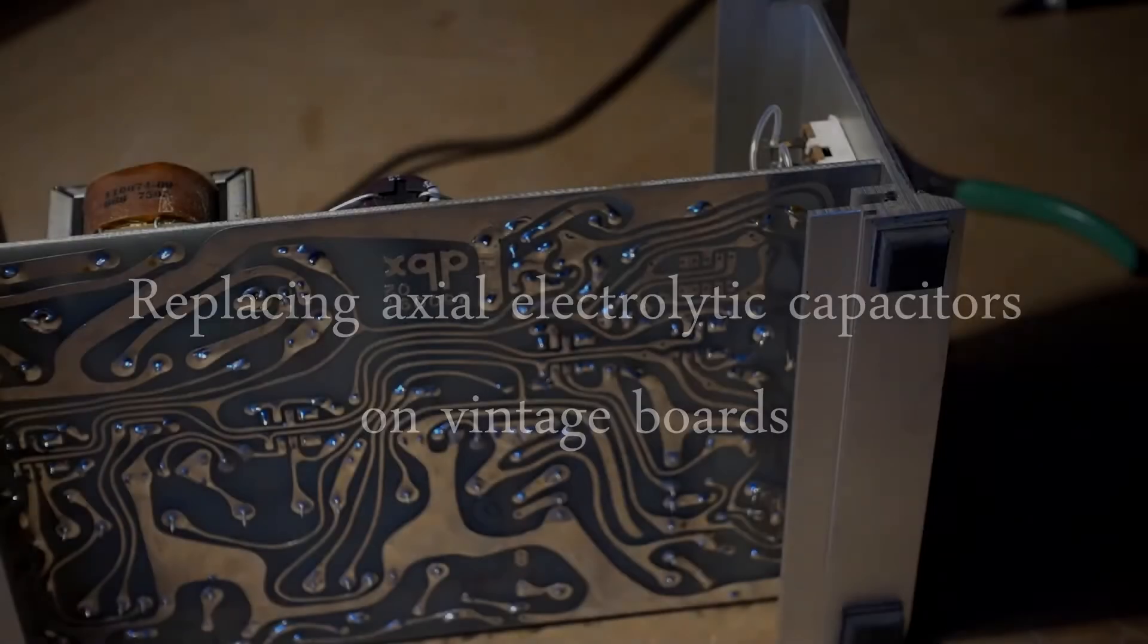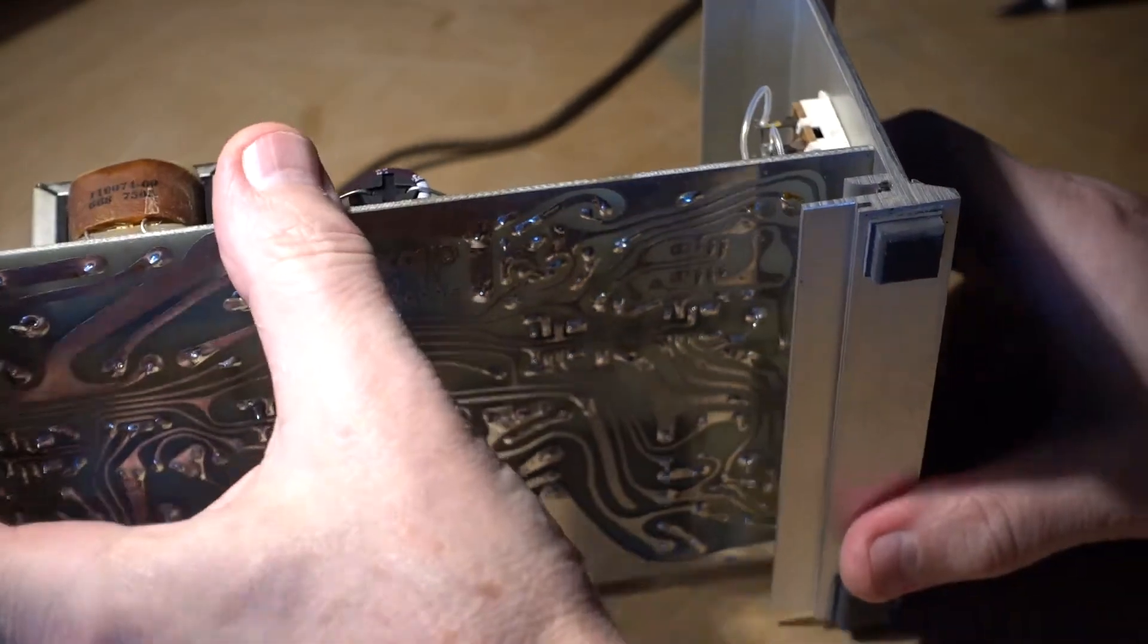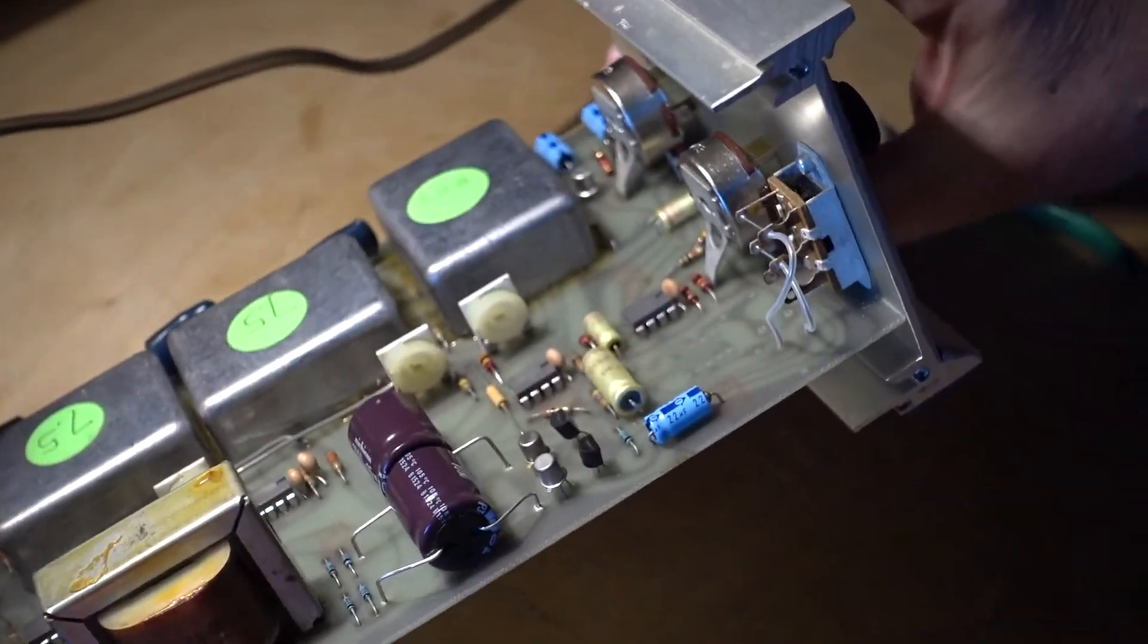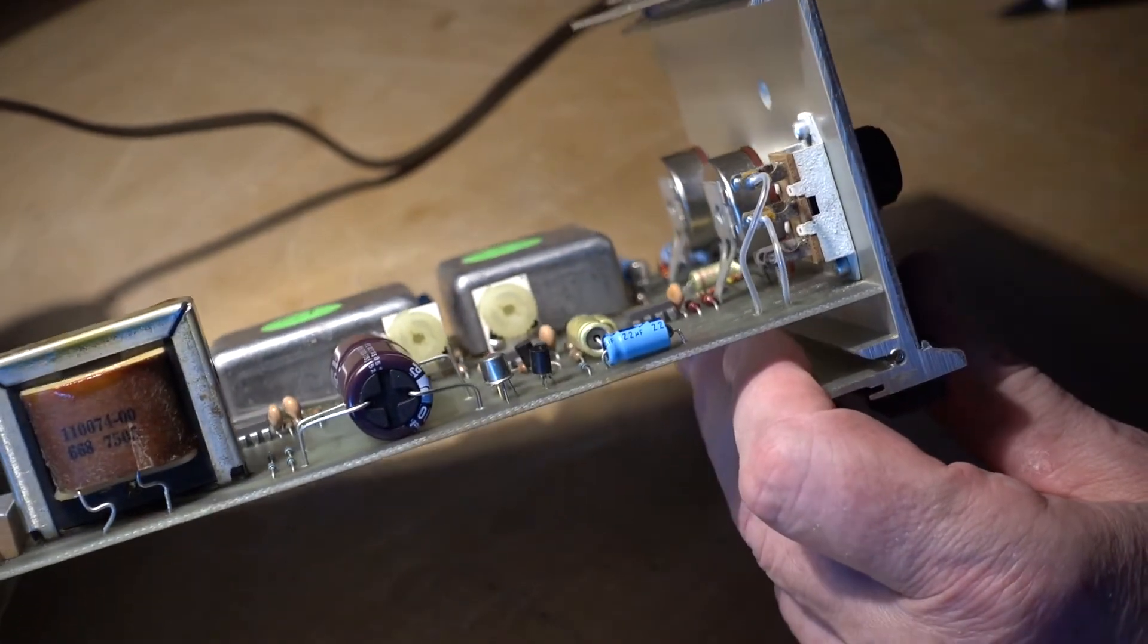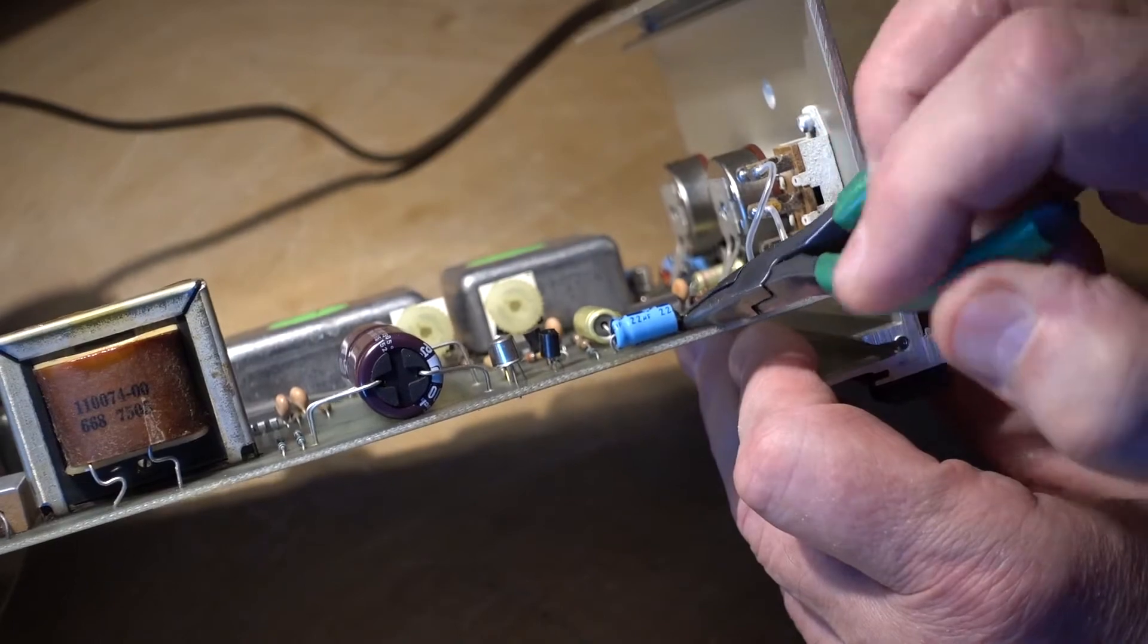Hi! In this video, I'm going to show you how to do a recap job on vintage electronics. In this case, it's going to be a DBX 117. It's an axial electrolytic capacitor.